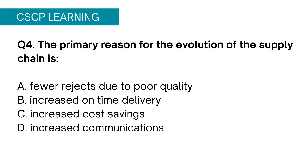Question 4: The primary reason for the evolution of the supply chain is: Option A, fewer rejects due to poor quality; Option B, increased on-time delivery; Option C, increased cost savings; Option D, increased communications. Option A sounds irrelevant because this is not the core function of the supply chain. Option B seems appropriate because with proper planning and forecasting, delivery time can be improved. Option C, increased cost savings — supply chain definitely helps an organization reduce costs by adopting various methods of lean production.